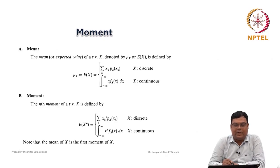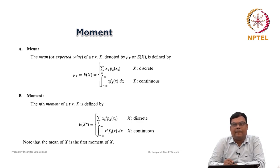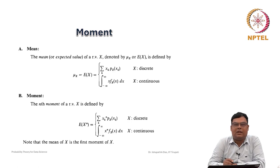We will discuss moments. We know that whenever we collect data, we ask some summary statistics to understand the data — for example, averages, then variability, variance. Usually when a class has some marks obtained by students, students ask what is the average of all the marks, so they can understand how the data and all marks are situated. But the average alone cannot be the only measure to understand the data; there are many other measures also required.